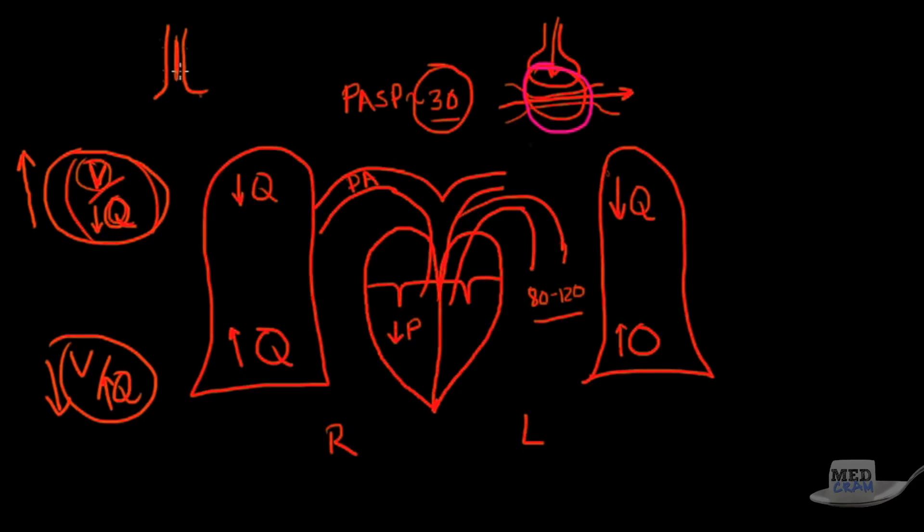We call that dead space—that would be an extreme, an infinitely high VQ ratio. Whereas the alternative is with a low VQ where basically ventilation is zero. We just talked about that type of mechanism of hypoxemia, and we call that shunt, just to give you an idea about what the extremes are.